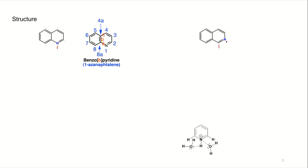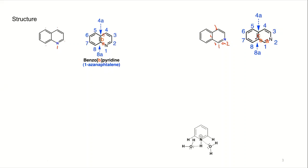You have to take the junction carbon as one, so nitrogen becomes position two. If you give the replacement name, it will be 2-azanaphthalene. For the Hantzsch-Widman nomenclature, this bond will be A, this B, and this C. The common bond between benzene and pyridine is C, so the name will be benzo[c]pyridine, or 2-azanaphthalene.